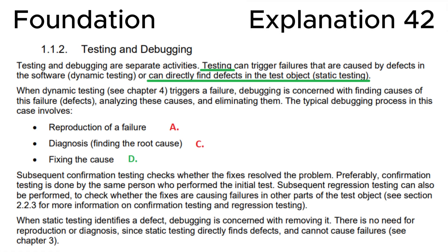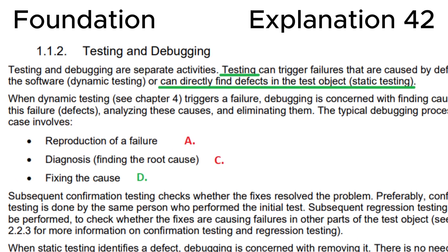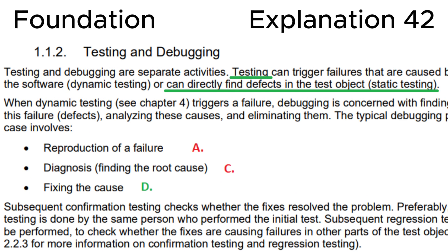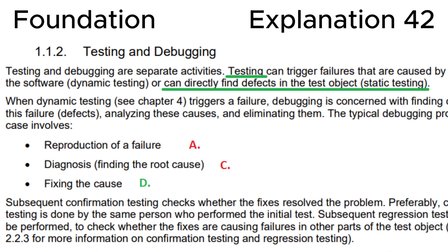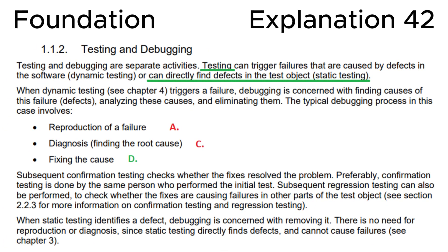Looking at section 1.1.2 on testing and debugging in the ISTQB Syllabus: testing can directly find defects in the test object through static testing, while debugging involves reproduction of a failure, diagnosis to find the root cause, and fixing the cause. In our case, the first two activities are not needed since we already found the defect during static testing — all we have to do is fix it.